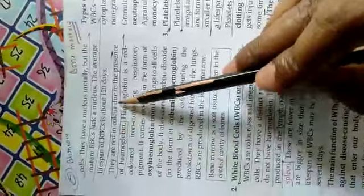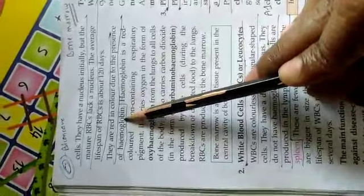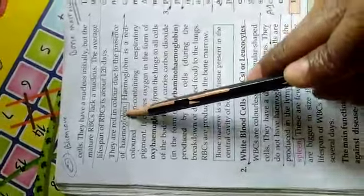Now they are red in color due to the presence of hemoglobin. Now I am going to tell you why the color of blood is red. We know that there is RBC, WBC, and platelets. RBC contains hemoglobin, and just because of the hemoglobin, the color of blood is red.